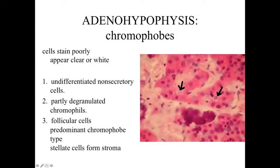The chromophobes are going to be these paler-staining cells, as outlined here with the arrows, because they don't take up the stain. There may be a variety of explanations for what these chromophobes are, but the majority of them are going to be follicular cells — stellate cells that form the stroma, the meshwork, the support framework for the entire gland. They may also be undifferentiated non-secretory cells, but the predominant ones are going to be these follicular cells.